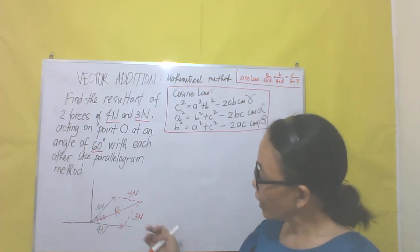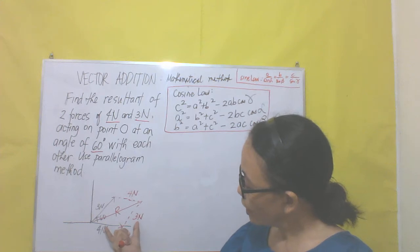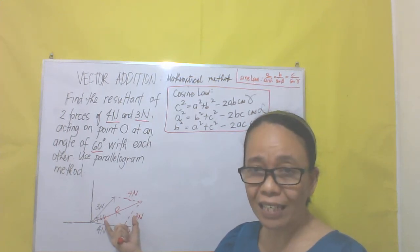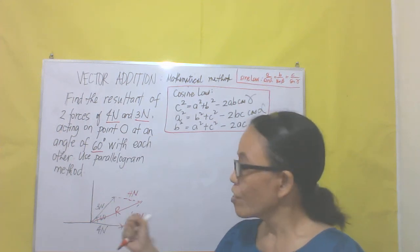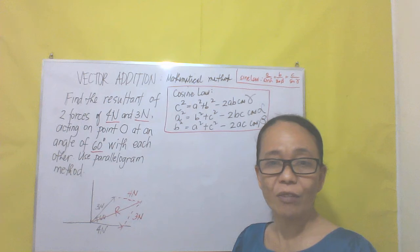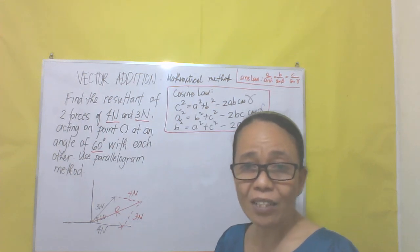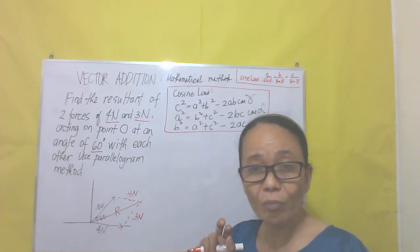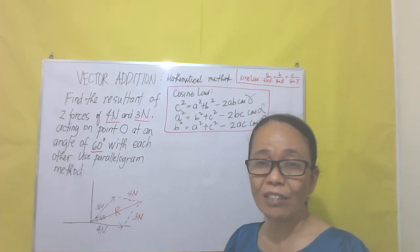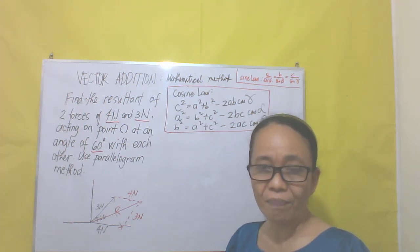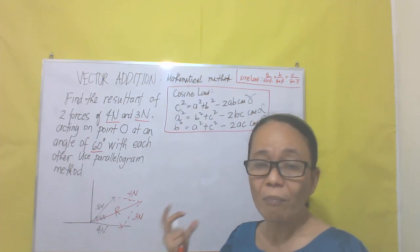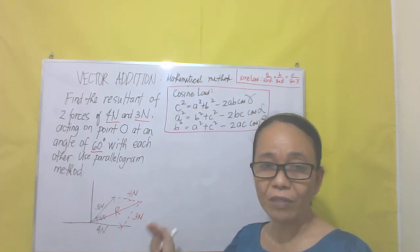If we consider half of this parallelogram, this is an oblique triangle. Oblique triangles are those triangles which are not right triangles. Since this is not a right triangle, the Pythagorean theorem is not applicable here.